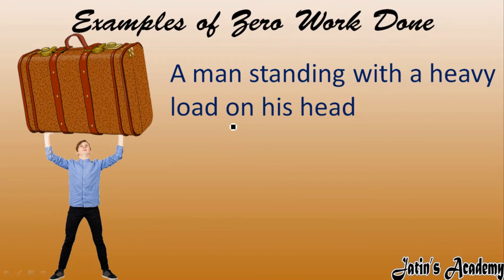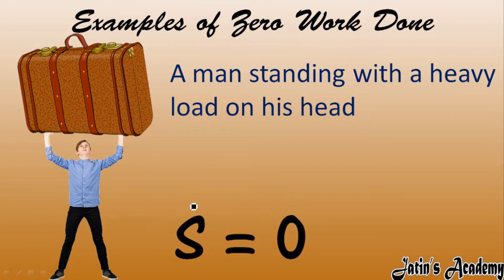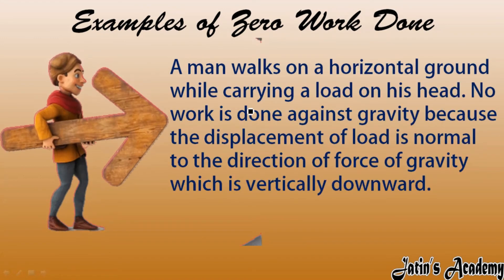For example, a man is standing with a heavy load on his head. Although the angle is not exactly 90 degrees, this is still a case of zero work done because displacement does not occur here. The person is standing at one place, so although he is applying a force on the body, there is no displacement of the body. Therefore this is a case of zero work done.